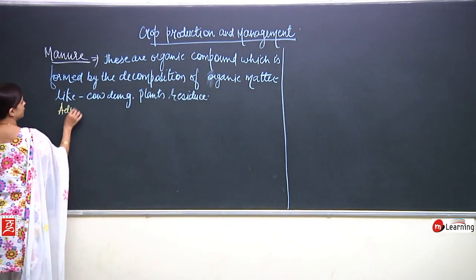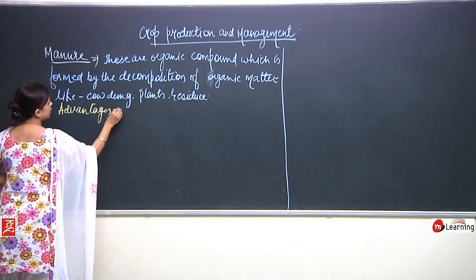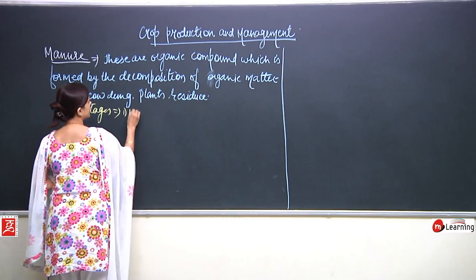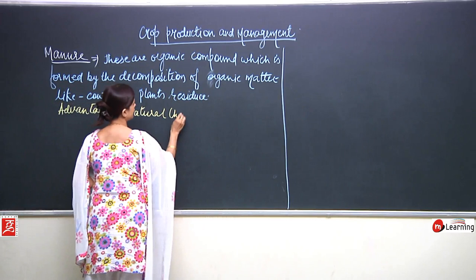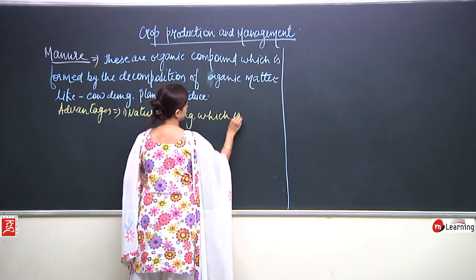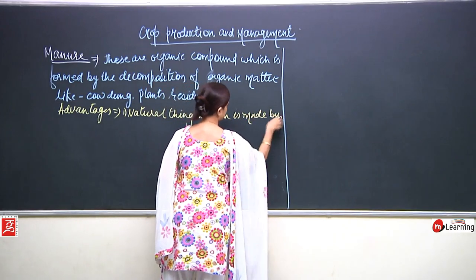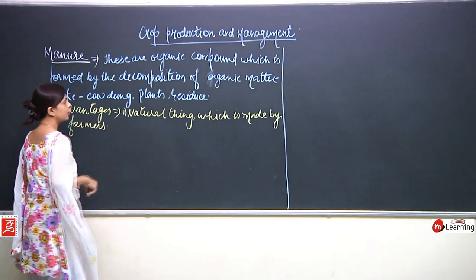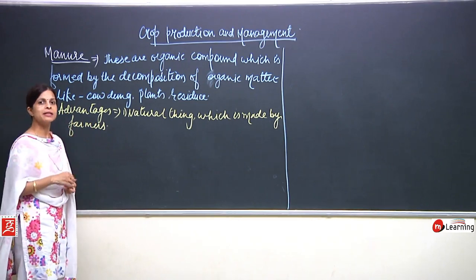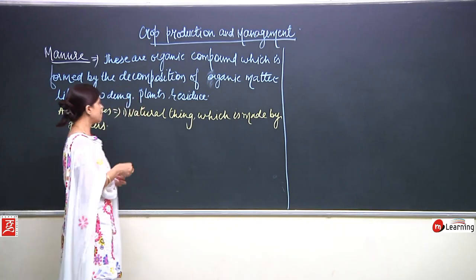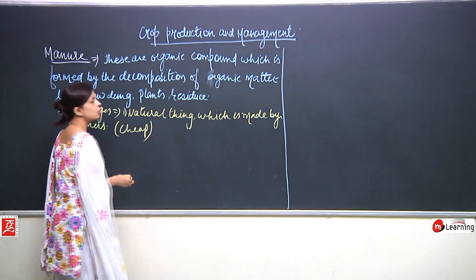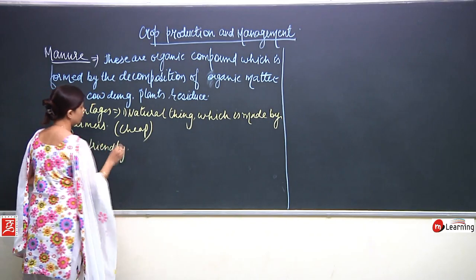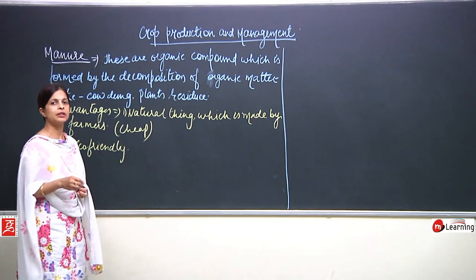What are the advantages of using manure? First of all, it is a very natural thing made by farmers themselves, so it is very cheap and costs are reduced. Next, it is very eco-friendly — it is not polluting the atmosphere, not polluting the soil, not polluting the water.